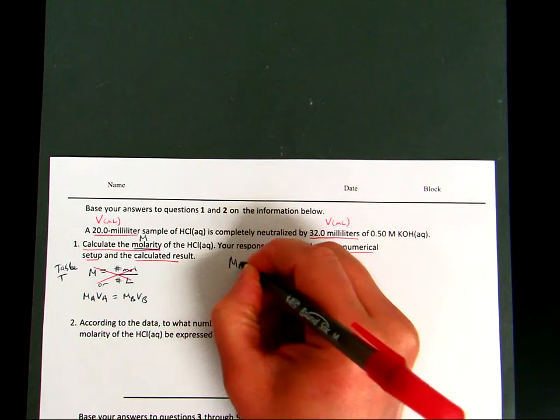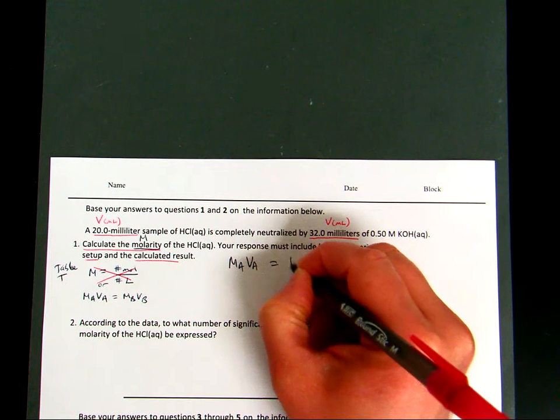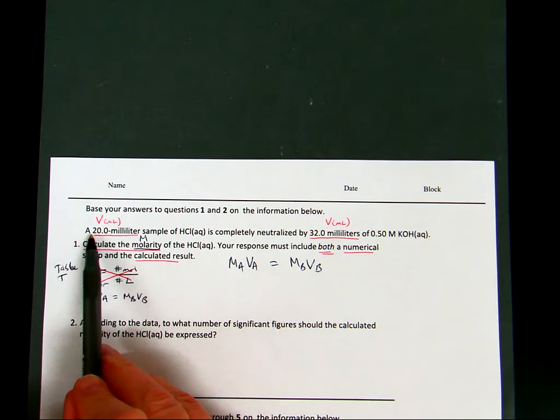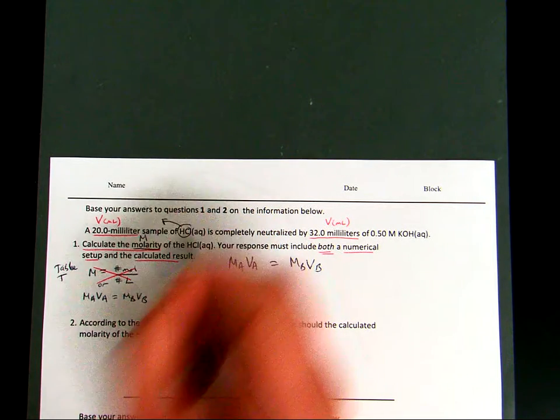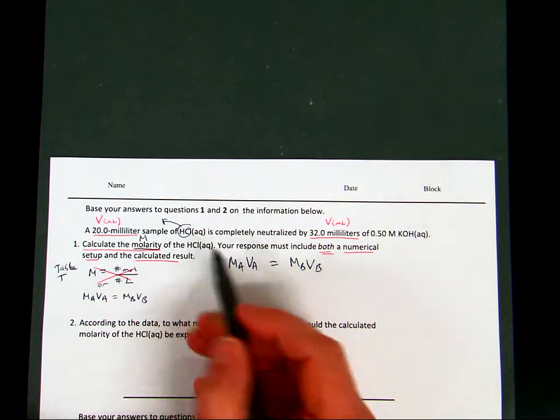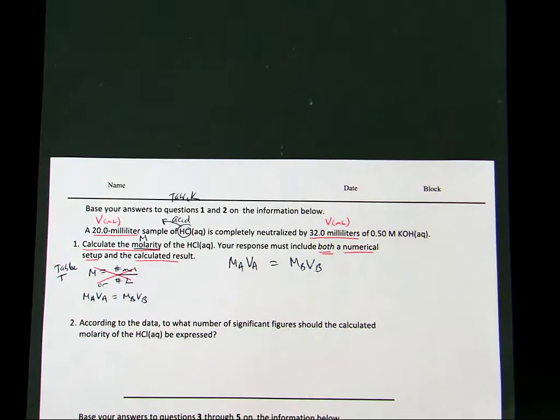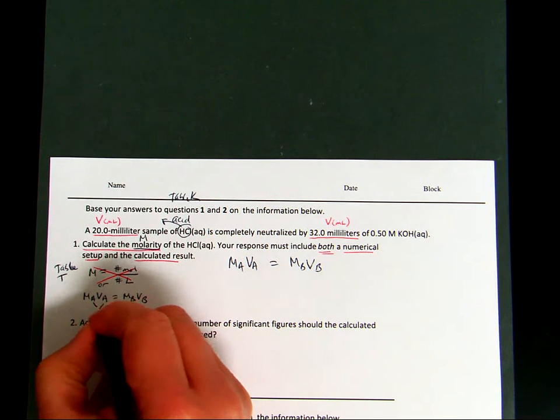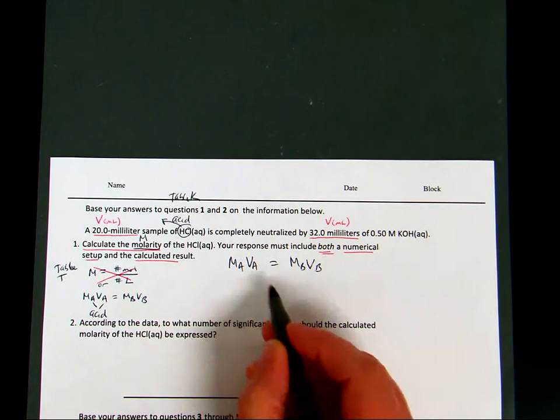So this is my jumping off board to solve this question correctly. So this is the relationship I'm going to use. Now notice, if I go back to the information that the 20.0 milliliters belongs to a sample of HCl. It belongs to that. HCl is an acid and you can find that on your Table K. And if I notice, I see two subscripts of A. That probably refers to the idea of acid. So I have a volume of an acid.